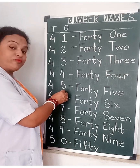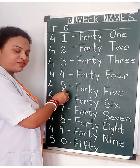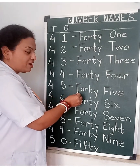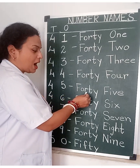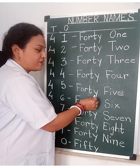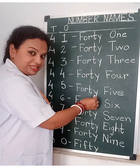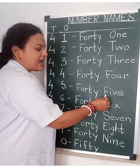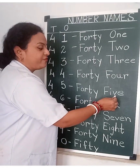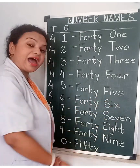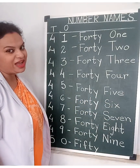4, 5 — 45. F, O, R, T, Y — FORTY. F, I, V, E — FIVE. 45.